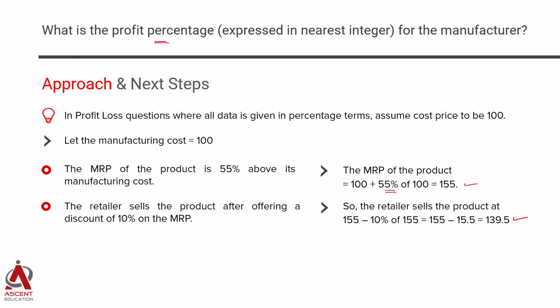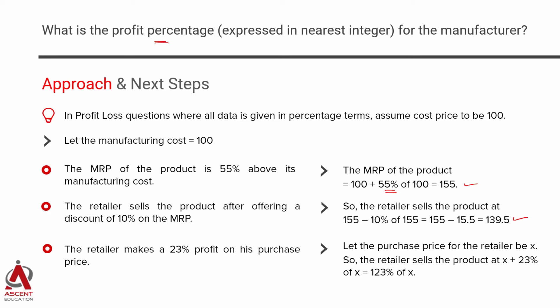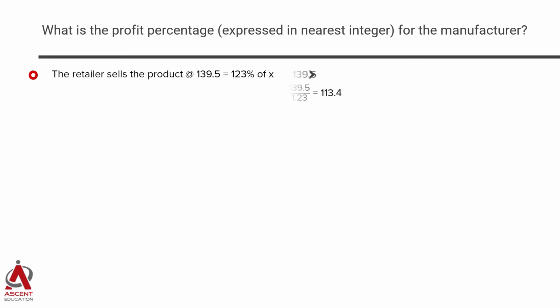We found the price at which the retailer sells, which is 139.5. He also makes a profit of 23% on his cost. What we do not know is the cost of the retailer, so let x be the cost at which the retailer is buying from the manufacturer. If he makes a 23% profit, he's going to be selling it at x plus 23% of x, which boils down to 123% of x, i.e., 1.23x.